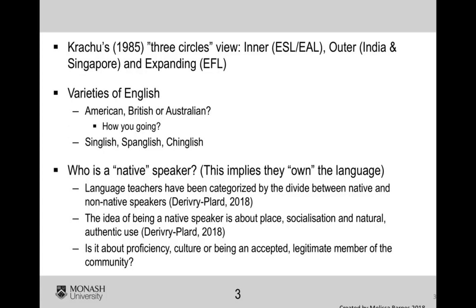I also think that the lines between the inner, outer, and expanding circles are becoming a bit more gray because of the way that English has become an international language. Sometimes we look at things based on trends of a country, but knowing that each family is very different — for myself, I'm married to an Australian, I'm American, and inevitably my children will have Australian accents. At one time we lived overseas in a country that spoke a different language, yet we had very different accents. So the way our world is changing and the effects of globalization means that these different circles are a bit harder to define.